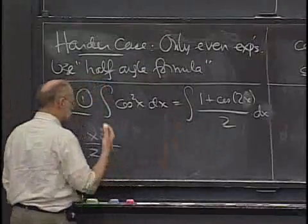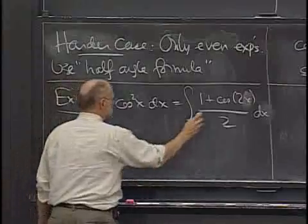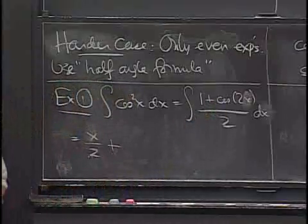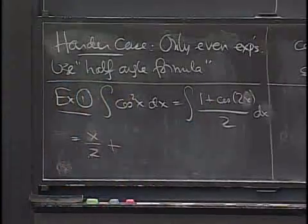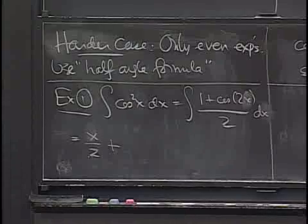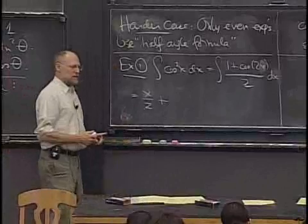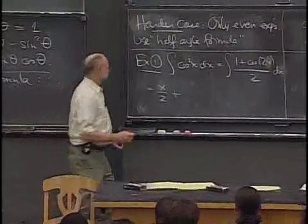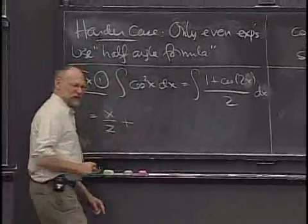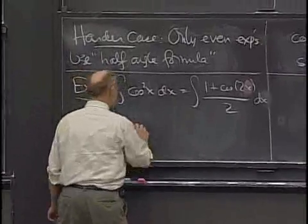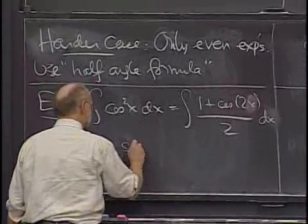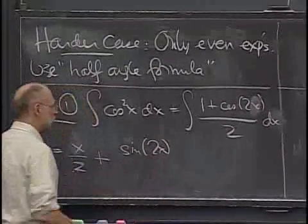And then the other one, OK, so this takes a little thought. The integral of the cosine is the sine, or is it minus the sine? Negative sine. OK. Shall we take a vote? I think it's positive. So you get the sine of 2x, but is that right? Over 2.